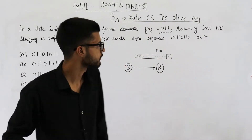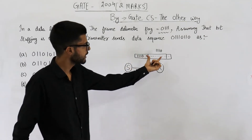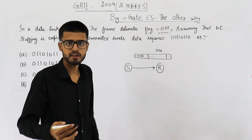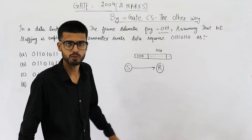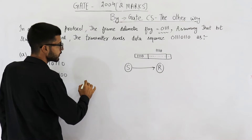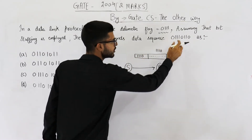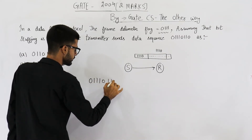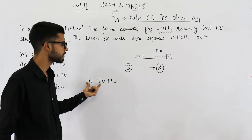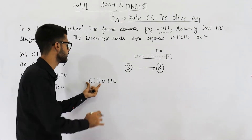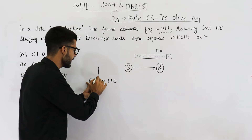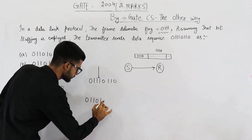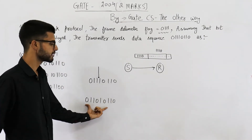Now, what is bit stuffing? The sender will send the data in such a way that whenever this pattern 0111 is seen, it will stuff a 0 to just break this pattern. The data that we want to send is 011101110. So we have the frame delimiter flag in our data, which means the sender will add a 0 here.